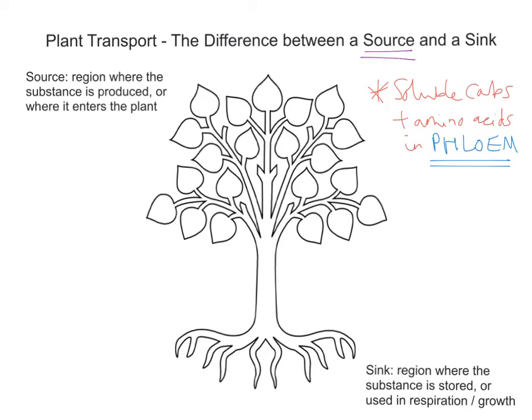Let's deal with source first of all. On the left we've got a spec definition. There's a reason why I've put source at the top and sink in the bottom right corner — it's a bit misleading because some students think source and sink can be really far apart, but that isn't always the case; they can actually be right next to one another. So source: it is the region where the substance is produced or where it enters the plant. Let's think of some examples. Glucose and sucrose, for example, are produced in the leaves in photosynthesis.